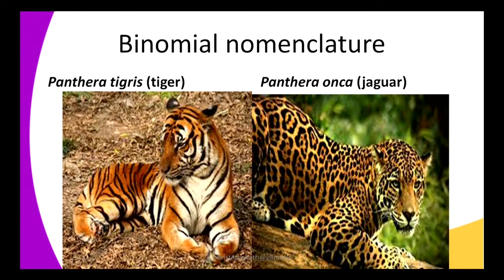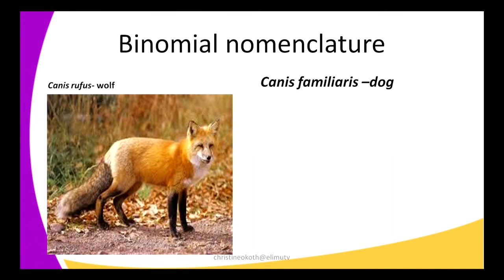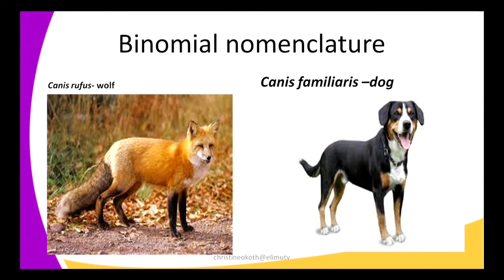Another example: we have Canis rufus, which is a wolf, and Canis familiaris, which is a dog. If you observe, the first name — the genus — is the same for both: Canis. It means they come from the same genus. The species name is what is different: rufus for the wolf and familiaris for the dog.